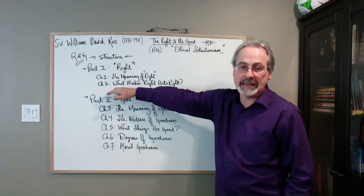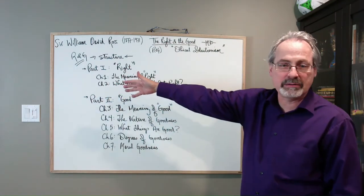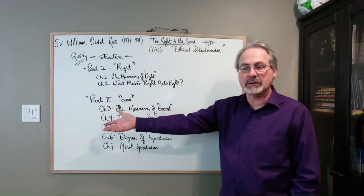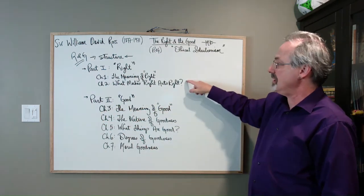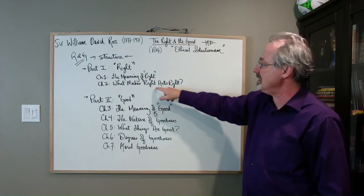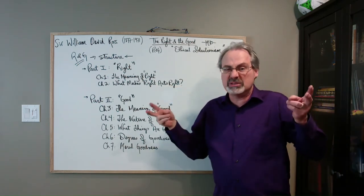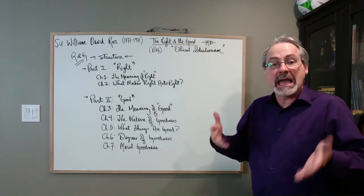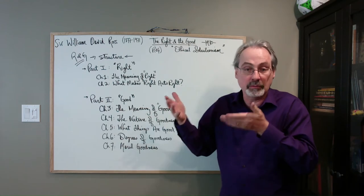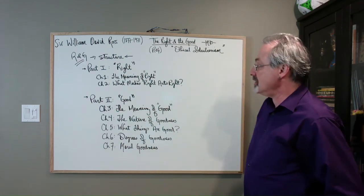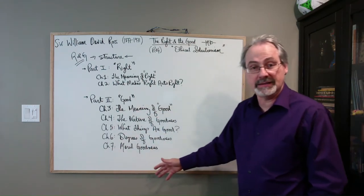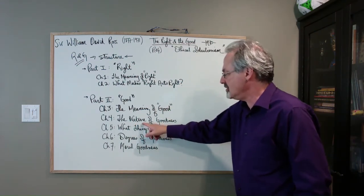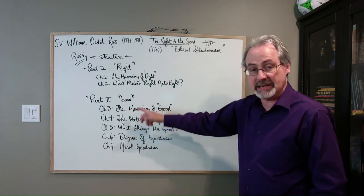And then this is probably the most famous part of this book. As a matter of fact, typically when Ross is taught in philosophy courses, that's what people center on. What makes right acts right? So how do you apply the term right as Ross understands the concept of right? And then, of course, it's a major analysis in the second part of the concept of good. What does it mean? What is its nature? So the meaning and the nature are split.